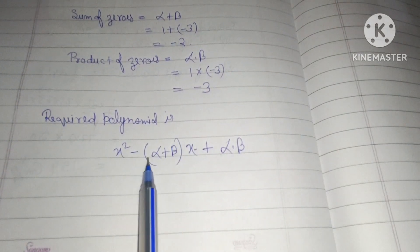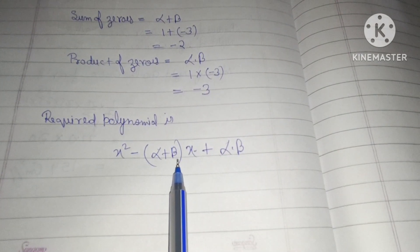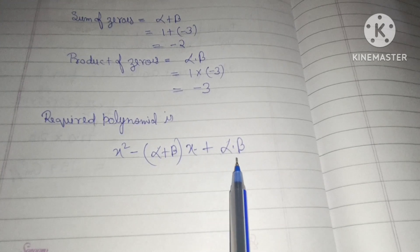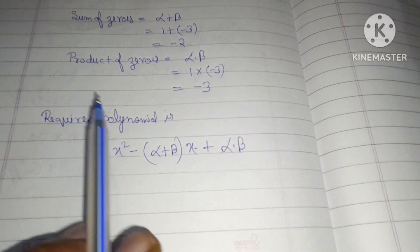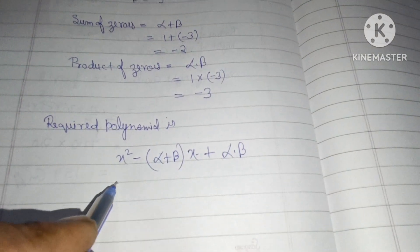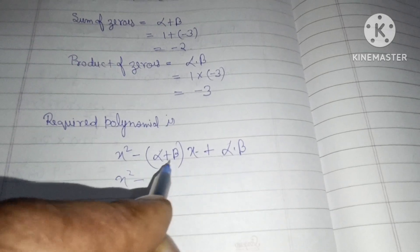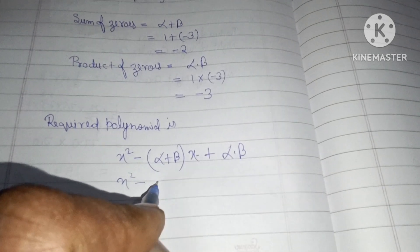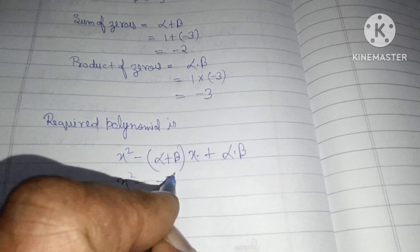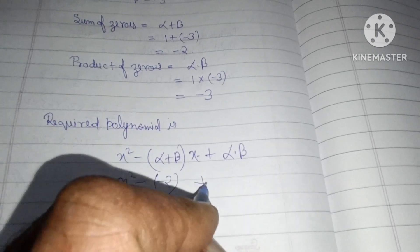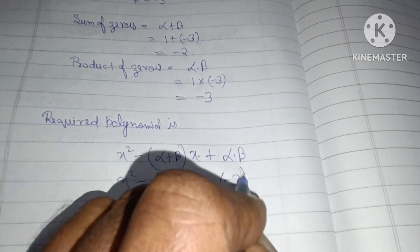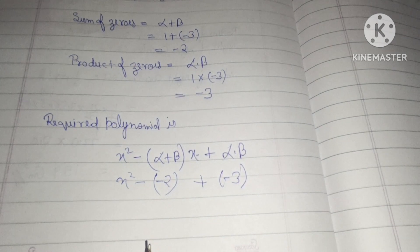The required polynomial is x square minus (alpha plus beta) x plus alpha beta. x square will remain as is, and alpha plus beta ki jagah minus 2 put ho jayega, aur alpha beta ki jagah minus 3. Solve karke aayega x square plus 2x minus 3.